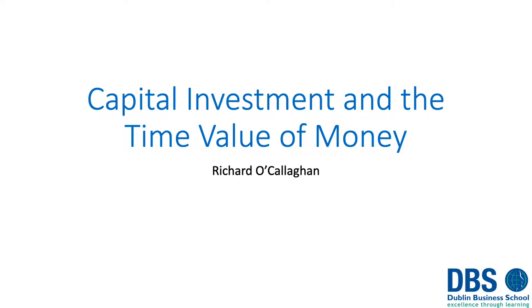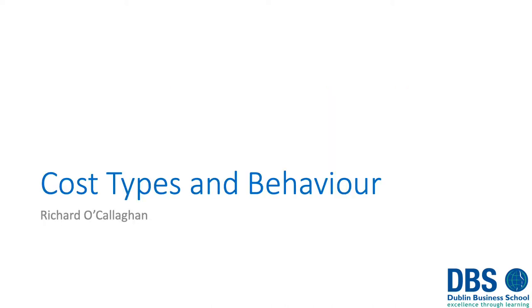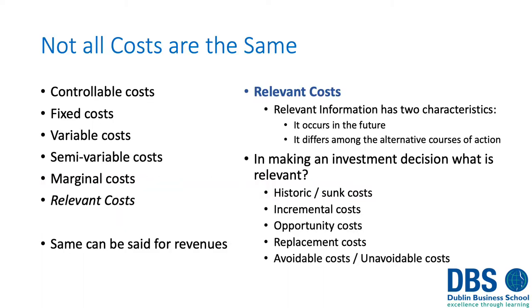We're going to take a quick recap of the area of capital investment and the time value of money. In this example we'll start with a brief discussion of cost types and cost behaviors. We usually try to divide costs under a number of different headings — things like controllable costs, fixed, variable, and semi-variable. The area I wanted to focus on is relevant costs, which are costs that may or may not have an impact on the decision.